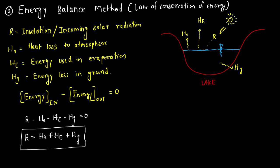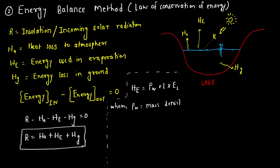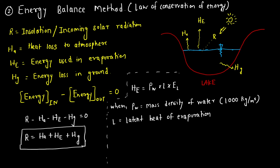The energy used in evaporation, He, can be written as: He = ρw × L × EL, where ρw is the mass density of water (1000 kg/m³), L is the latent heat of evaporation (given in the question), and EL is the rate of evaporation.